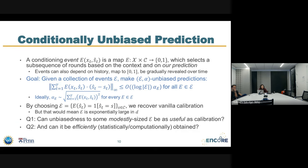Now let me define what I mean by conditionally unbiased. Conditioning here will be with respect to events, which in the online setting are represented by maps that take in the context x_t and the prediction ŝ_t — and can also take prior history. The output is either zero or one, or anything in the interval zero to one, where zero stands for the event being inactive and one stands for it being active.